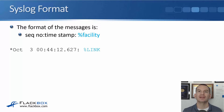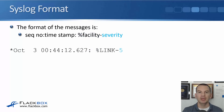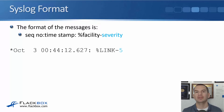The next thing listed is the facility — this is the thing that generated the event. In our example it's going to be a change of state on a link, so the facility here is the link. If it had been an OSPF adjacency coming up or going down, the facility would have been OSPF. The next thing is the severity level, which we'll cover in more detail in a few slides — there are eight different severity levels going from zero through to seven, with zero being the most severe.